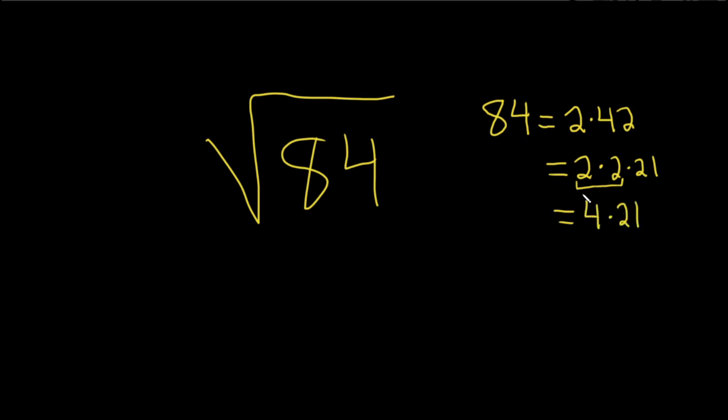So this is the largest factor of 84 that when we take the square root of it we get a whole number. So now we come back over here and we basically replace the 84 with 4 times 21.